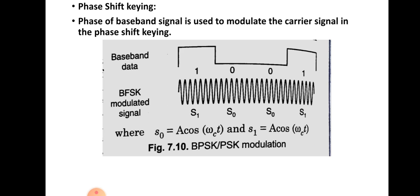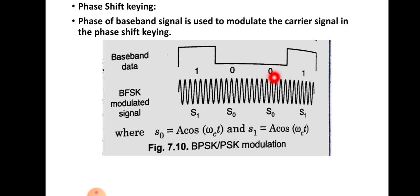Next is phase shift keying (PSK). In PSK, the phase of the baseband signal is used to modulate the carrier signal. The modulated signal shows a phase change at the interface between 1 and 0 — when there is a transmission from 1 to 0, there is a phase change. Similarly, from 0 to 1, a phase change of 180 degrees occurs.